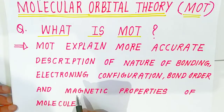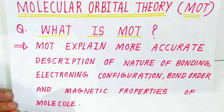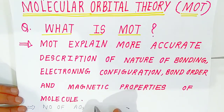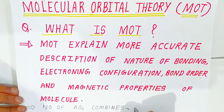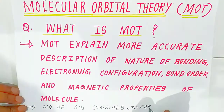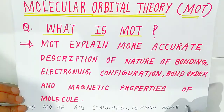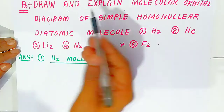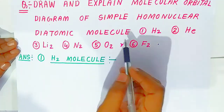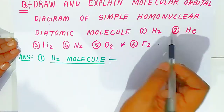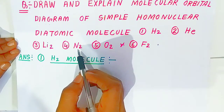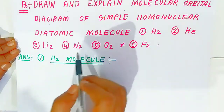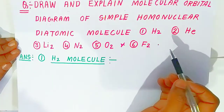We have seen valence bond theory in the last lecture. Now we are going to see molecular orbital theory. A key principle: the number of atomic orbitals (AOs) combines to form the same number of molecular orbitals. We will draw and explain the molecular orbital diagram of simple homonuclear diatomic molecules — hydrogen, helium, lithium, nitrogen, oxygen, and fluorine molecules.